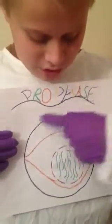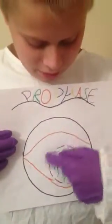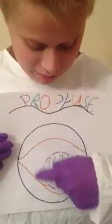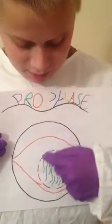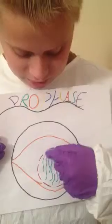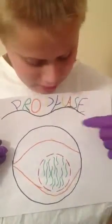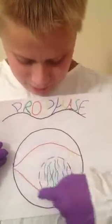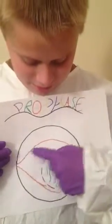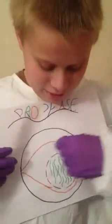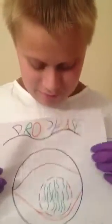Next is prophase. It's still in its globular shape, but the nuclear membrane is starting to disappear. The DNA is starting to come into strands, and the spindle fibers are forming around it, surrounding it.